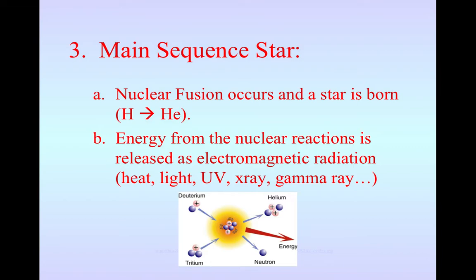Energy from the nuclear reactions is emitted in a variety of ways. So we call it electromagnetic radiation. And that's heat, light, UV, X-ray, and gamma ray. So there's all sorts of energy. Not just the energy that we see with our naked eye when we go outside at night.